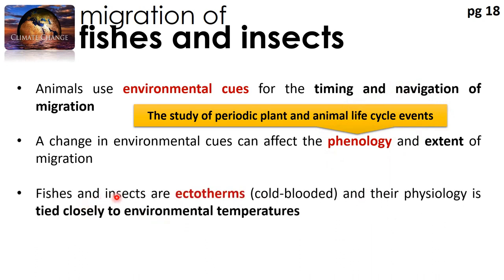Furthermore, fishes and insects are ectotherms — they are cold-blooded. So their physiology is tied very closely to environmental temperatures, and their migration patterns are tied very closely to changes in environmental temperatures as well.